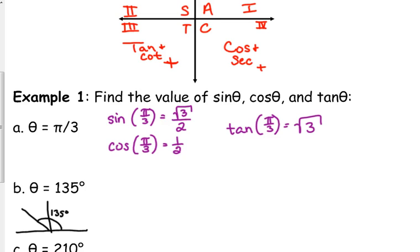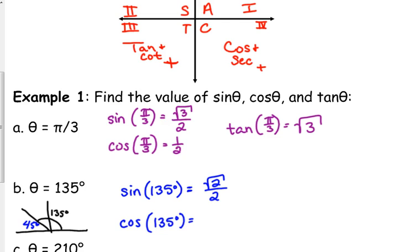Pretty much from this point forward, unless we're doing applications, we're only going to deal with those. It has a reference angle of 45 degrees. So the sine of 135 has the same value as the sine of 45 degrees, meaning it is square root of 2 over 2, and we're in the second quadrant — sine's positive, so I leave it. Cosine of 135 degrees has the same value, square root of 2 over 2, as the cosine of 45 degrees, but in the second quadrant cosine is negative, so it's negative square root of 2 over 2. The tangent of 135 degrees is the sine over the cosine. If you put something over itself it is 1, but in the second quadrant tangent is negative, so that is equal to negative 1.